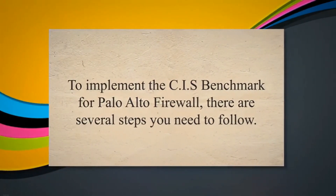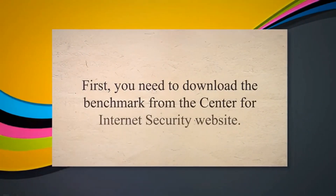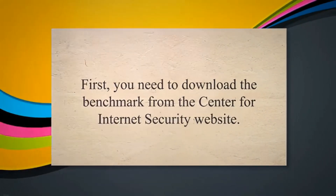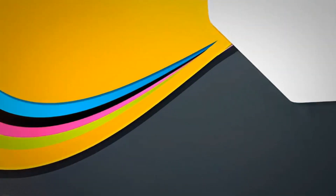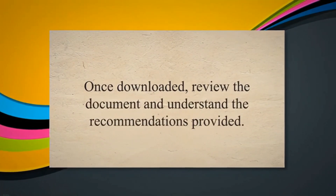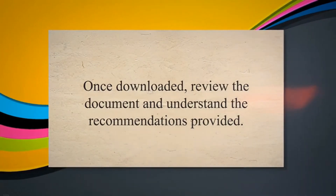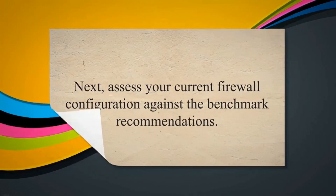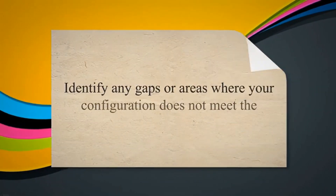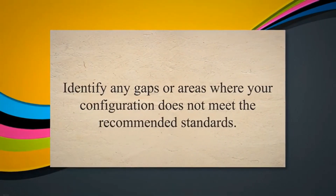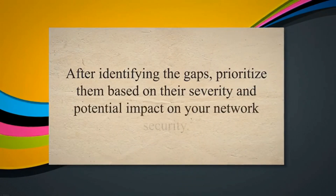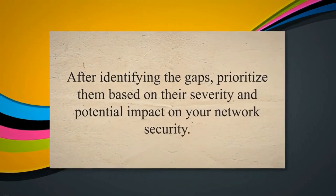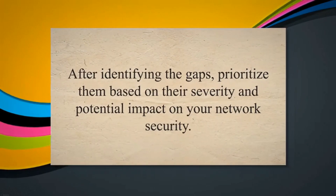To implement the CIS benchmark for Palo Alto firewall, there are several steps to follow. First, download the benchmark from the Center for Internet Security website. Once downloaded, review the document and understand the recommendations provided. Next, assess your current firewall configuration against the benchmark recommendations, and identify any gaps or areas where your configuration does not meet the recommended standards.